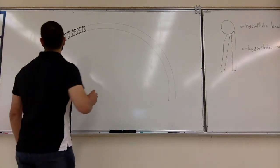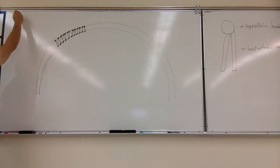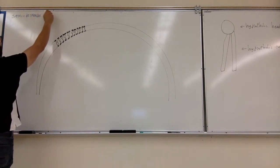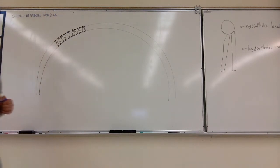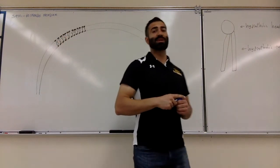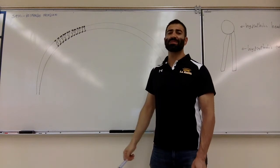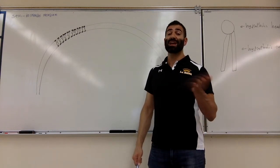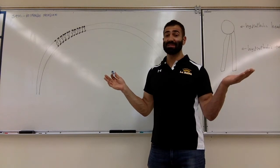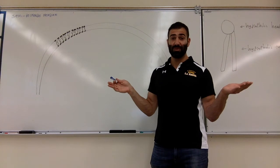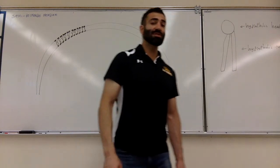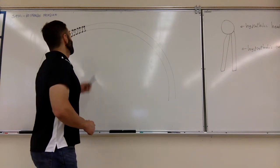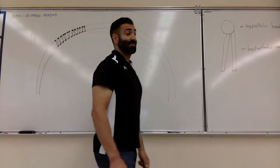Semi means 'kind of' and permeable means 'pass through,' so this means that things can kind of pass through this membrane. There are certain things that can go into and out of the cell without any impediments, and then there are things that cannot freely move through the cell, so they need some help. Before we talk about what can freely go inside the cell, let's talk about what gives the cell membrane its semi-permeable properties to begin with.